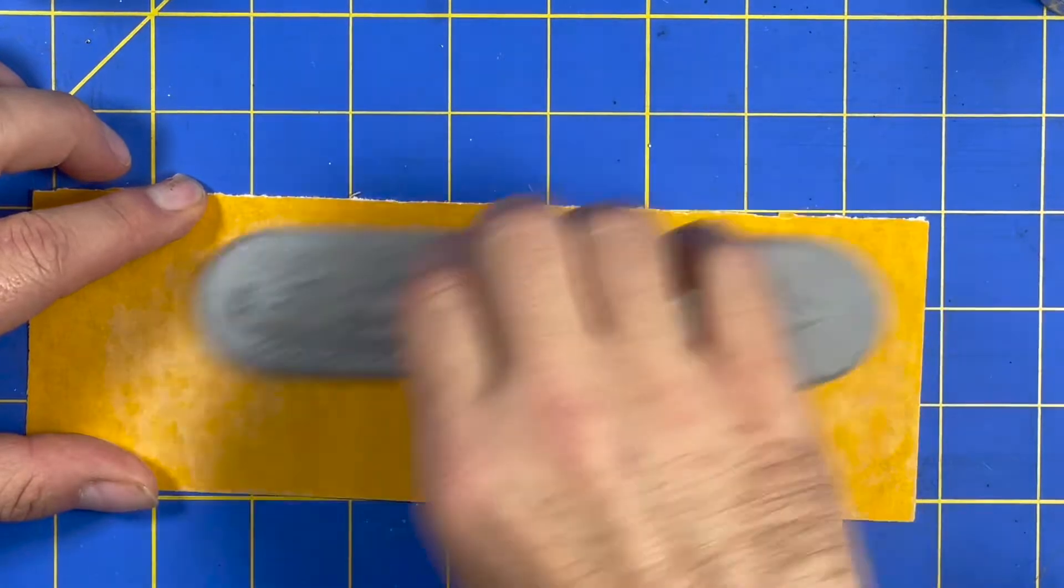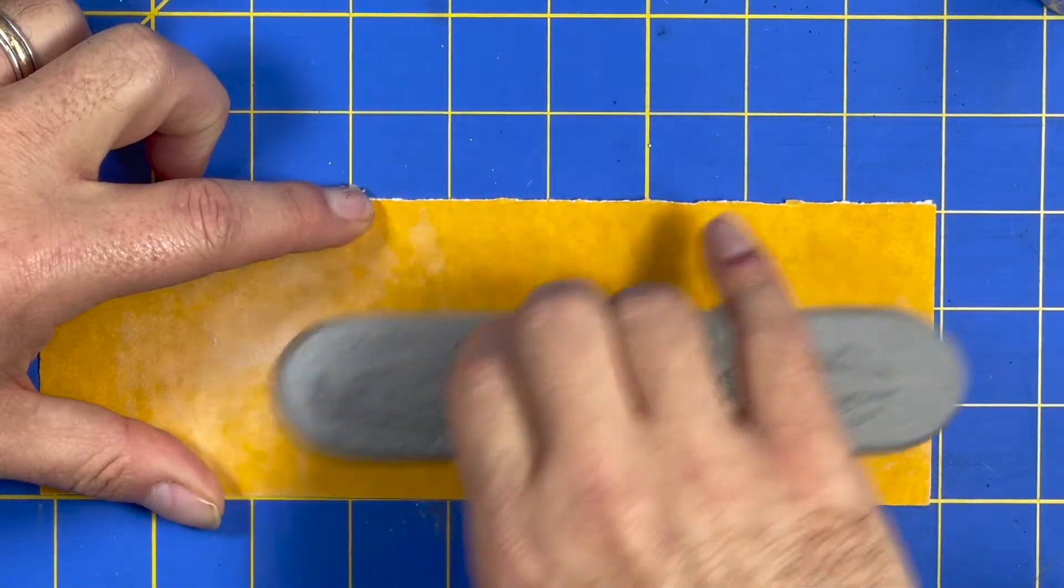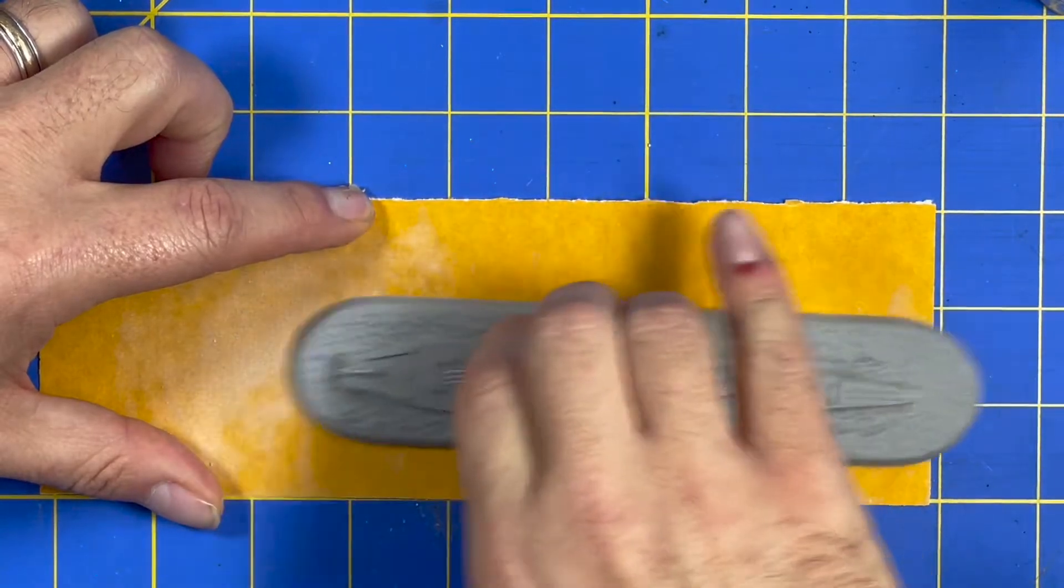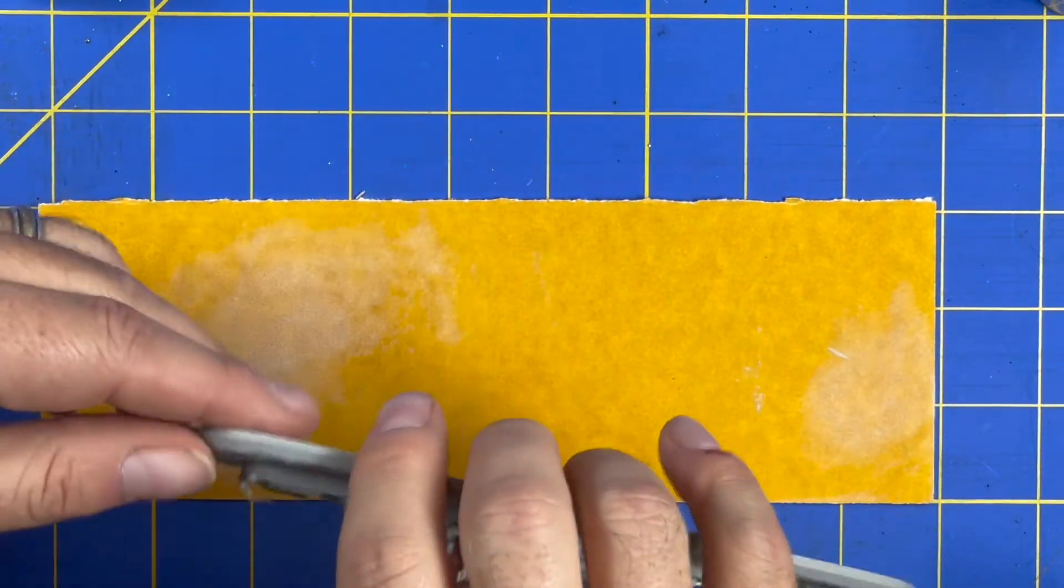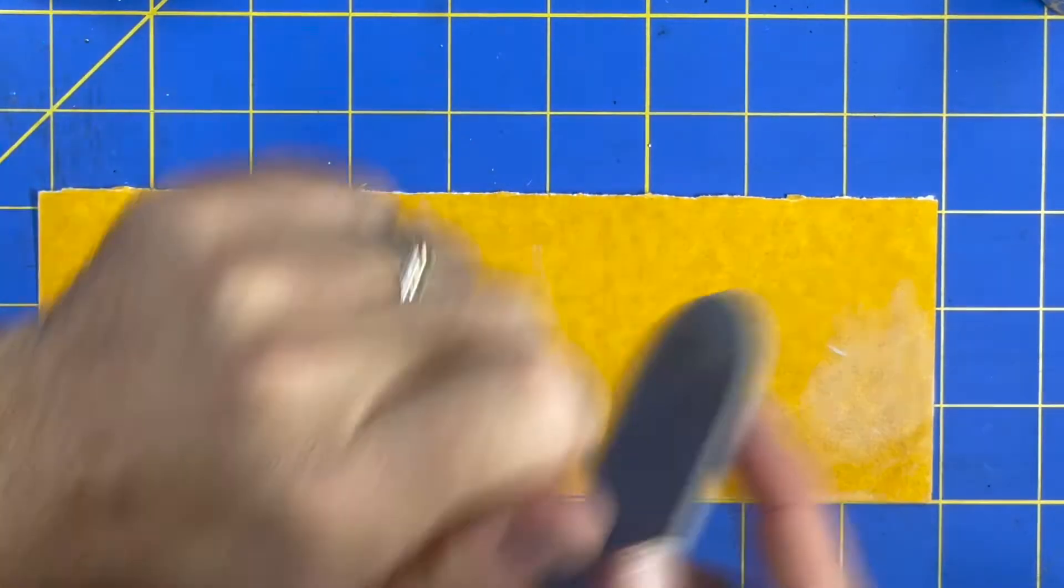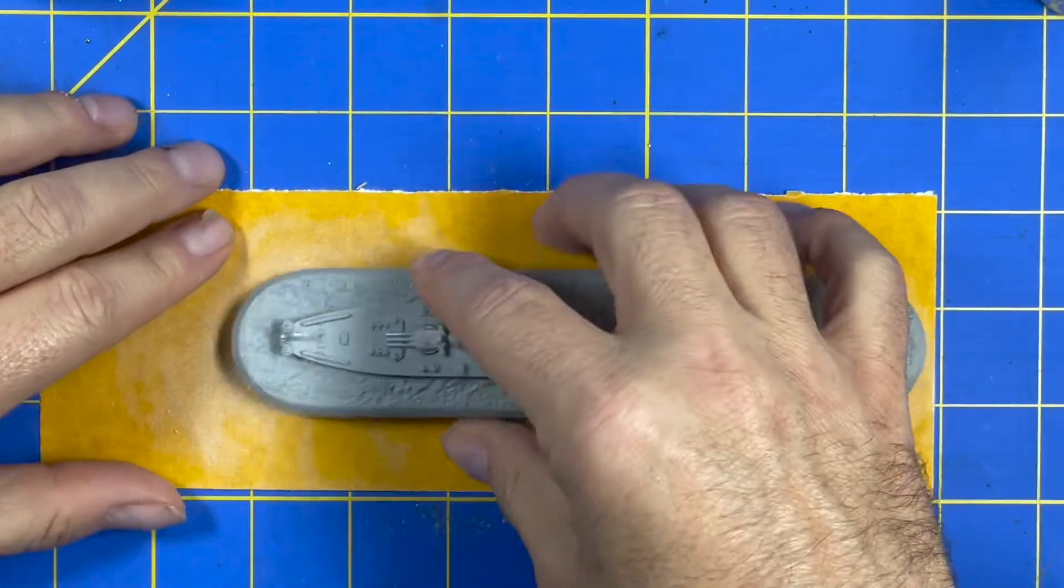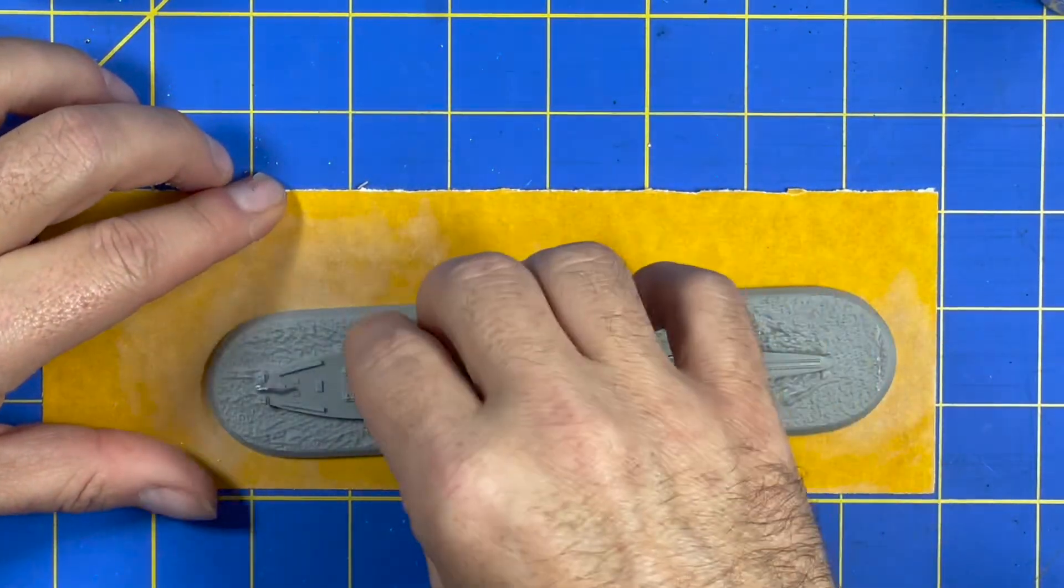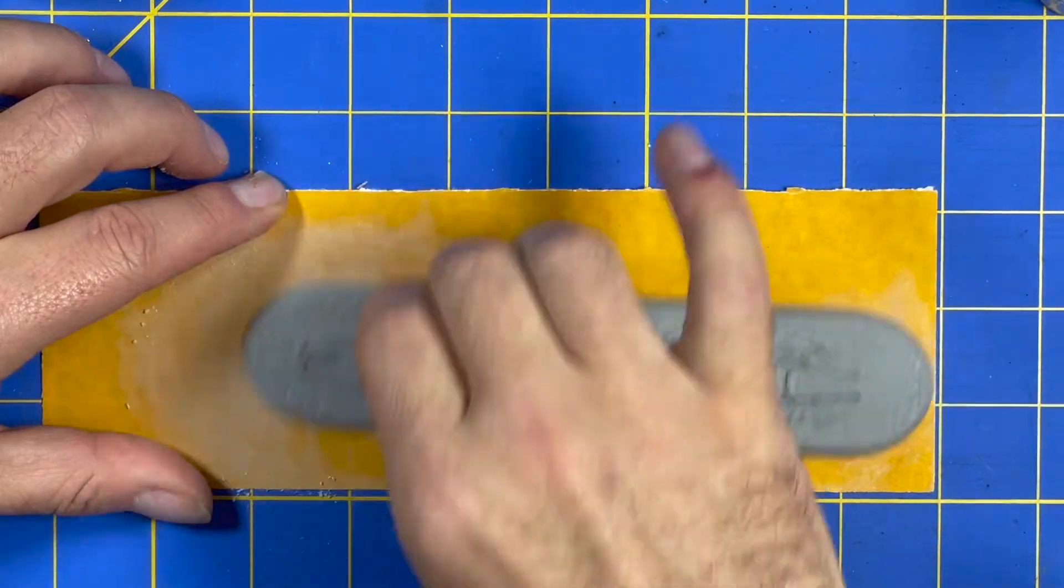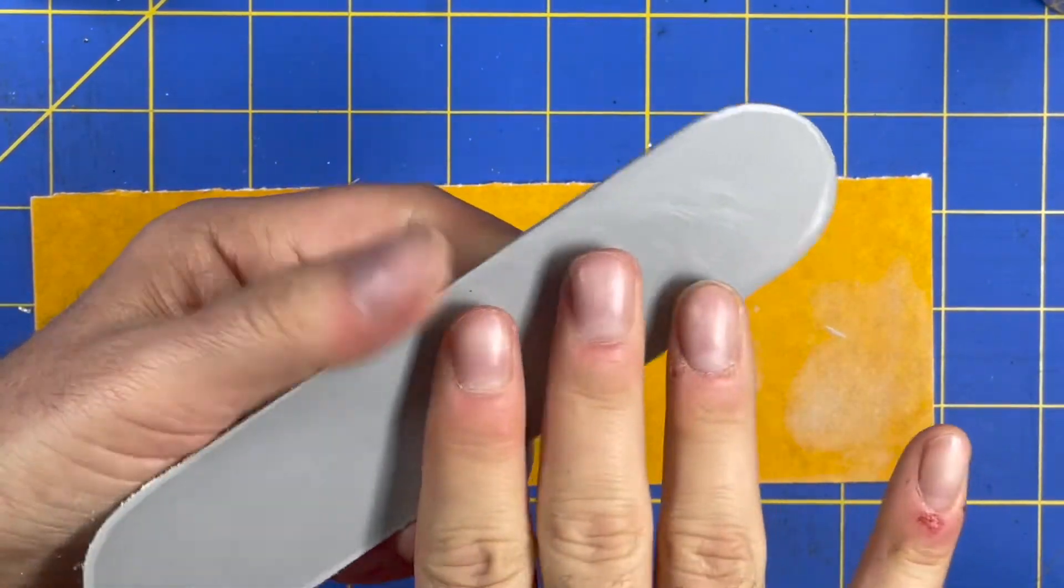This might not be the most convenient way of doing it, but of course this is the way I got to do it to show y'all what's happening. You could also get a block of wood and wrap this around and then go at it like this if you wanted to, but for demonstration purposes this should suffice.